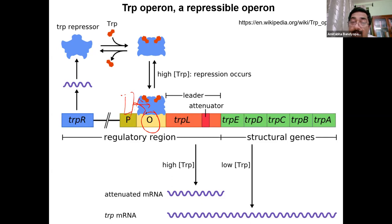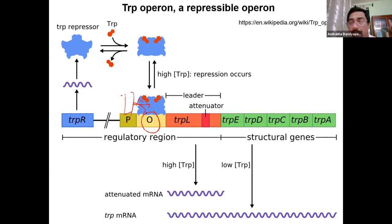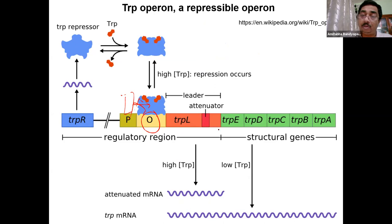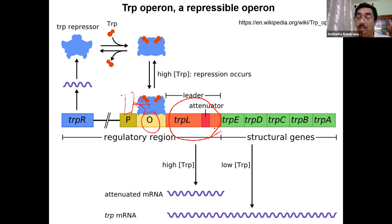Having just the operator is not sufficient for tight regulation of the tryptophan operon. There is a second level of regulation that ensures that when tryptophan is high, there is absolutely no transcription of the biosynthetic genes. This mechanism involves what is called a leader sequence — the tryptophan leader — and within it a specialized DNA element called the attenuator.